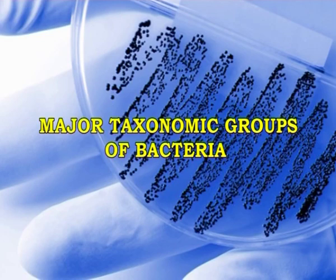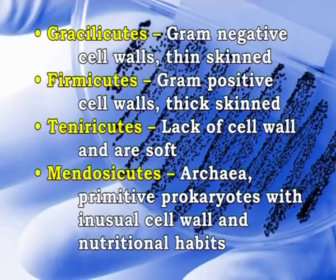Major taxonomic groups of bacteria, as per Bergey's manual, are divided as: Gracilicutes — Gram negative cell walls, which are thin-skinned; Firmicutes — Gram positive cell walls, which are thick-skinned; Tenericutes — lack cell walls and are soft; and Mendosicutes — primitive prokaryotes with unusual cell walls and nutritional habits.